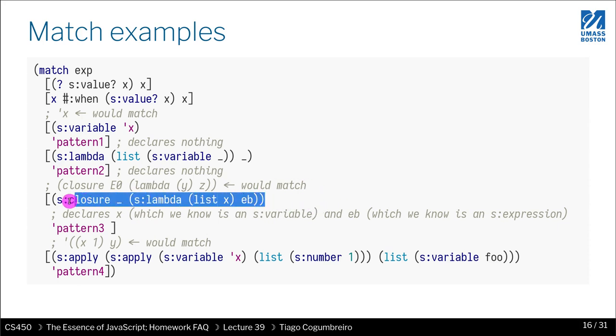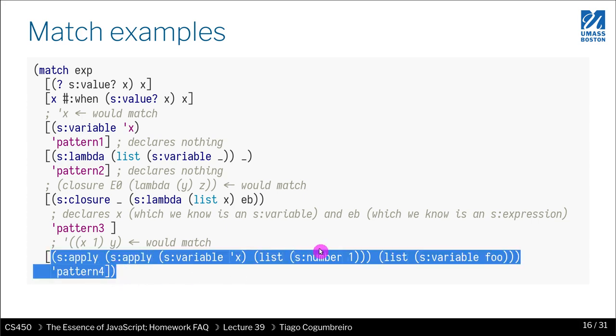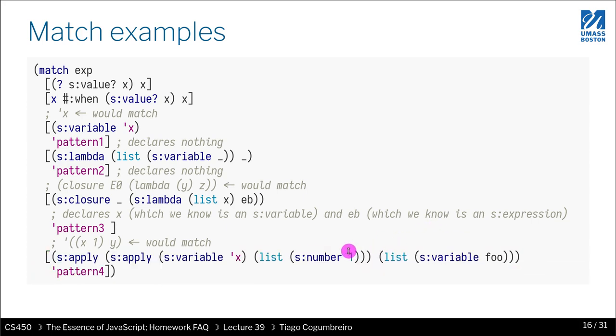It's very close to what you want in homework seven. This is another example, very close to what you want as well. This is a function application which has a nested function application with a specific variable name, which has exactly one argument, and I passed exactly the number one to it. Here are the arguments that I passed to that function, exactly a variable with a name I don't care about, that's assigned to variable foo.